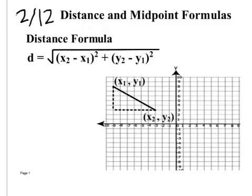Today we're covering distance and midpoint formulas. The distance formula is: d equals the square root of (x2 minus x1) squared plus (y2 minus y1) squared. Does anyone know where the distance formula comes from? Yes — the Pythagorean theorem.